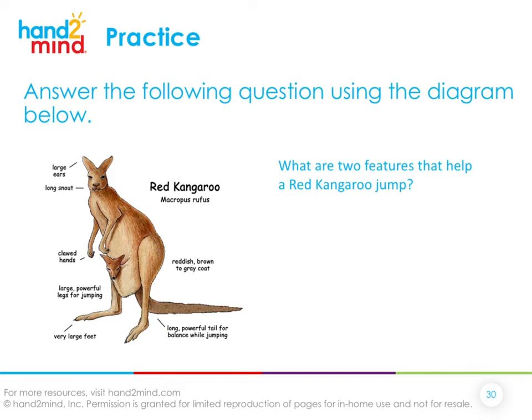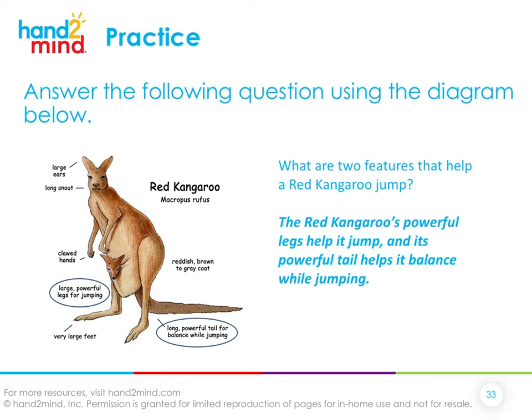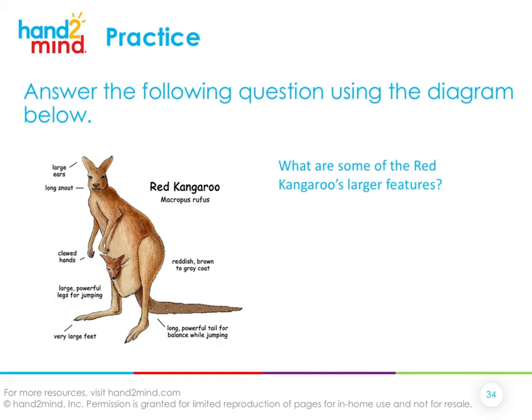Let's practice using some of these text features. First, let's answer questions about the diagram of the red kangaroo. What are two features that help a red kangaroo jump well? Looking at the diagram, I can see it has large powerful legs for jumping, and a long powerful tail for balance while jumping. So a red kangaroo's powerful legs help it jump, and its powerful tail helps it balance.